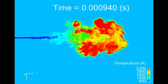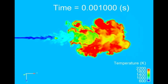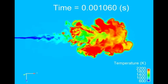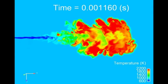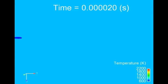This video shows that due to instabilities at the surface of the fuel jet, vortices or structures are observed that enhance fuel-air mixing.